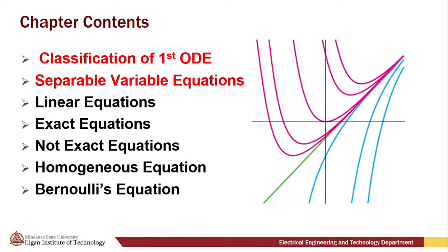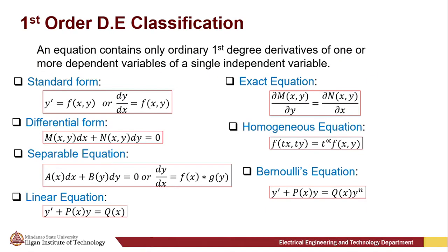Here is the chapter contents of our discussion. An equation that contains only ordinary first-degree derivatives of one or more dependent variables of a single independent variable is called a first-order ordinary differential equation. A first-order ODE comes with two forms.